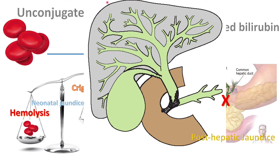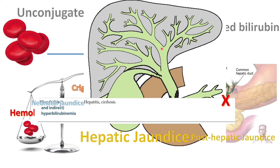If there is liver disease, it will affect the parenchyma — for example, cirrhosis — affecting the conjugating ability of the liver, causing a rise in unconjugated bilirubin. At the same time, it will affect the intrahepatic biliary tree, causing obstruction and a rise in conjugated bilirubin. So whenever there is hepatic disease such as hepatitis or cirrhosis, it causes mixed hyperbilirubinemia — both conjugated and unconjugated.